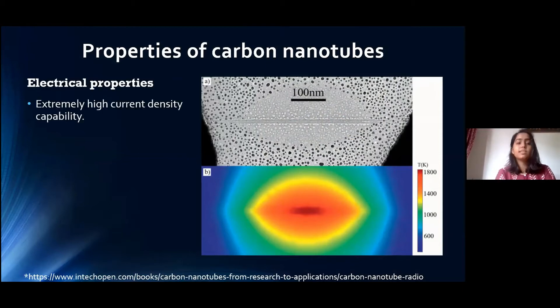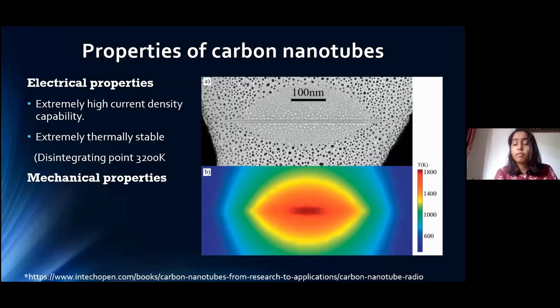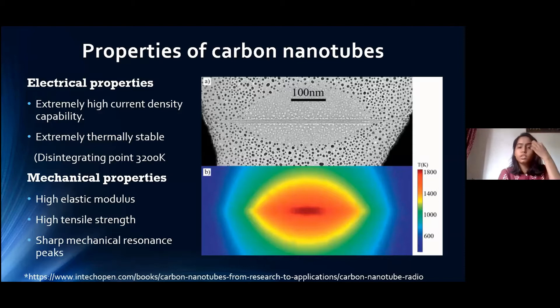The exceptional chemical and physical properties is the reason why carbon nanotubes was chosen as the basis for our nanotube radio. The electrical properties being it can withstand high current density because it's highly conductive, and it is extremely thermally stable, disintegrating at 3200 kelvin, like 800 kelvin more than graphene. These mechanical properties, highly elastic, highly tensile, having sharp mechanical resonance, and exceptional electrical, chemical, mechanical properties is the reason why carbon nanotube was so favorable.